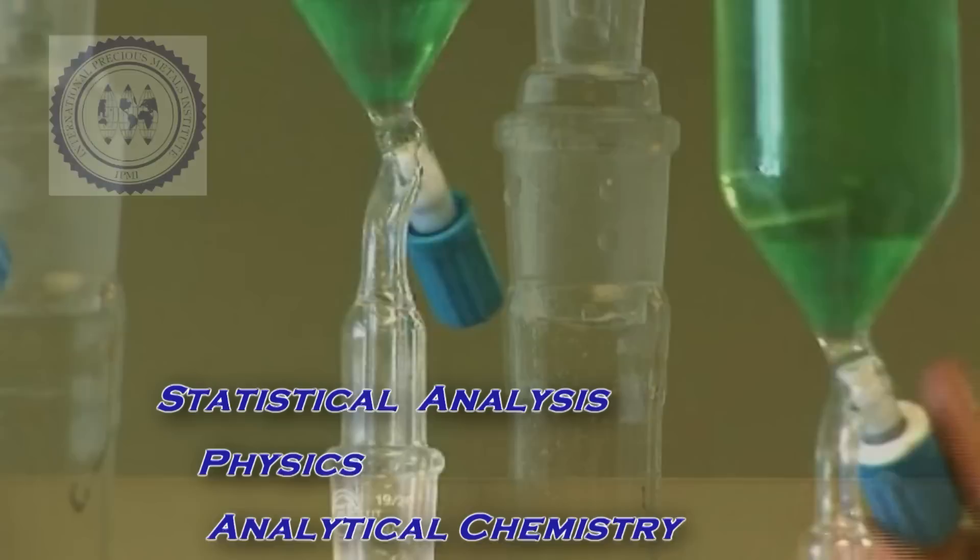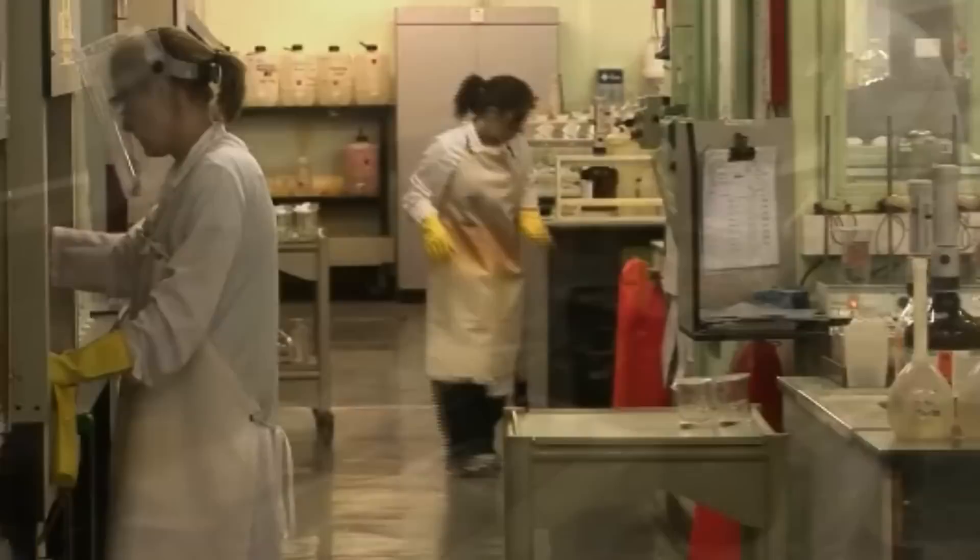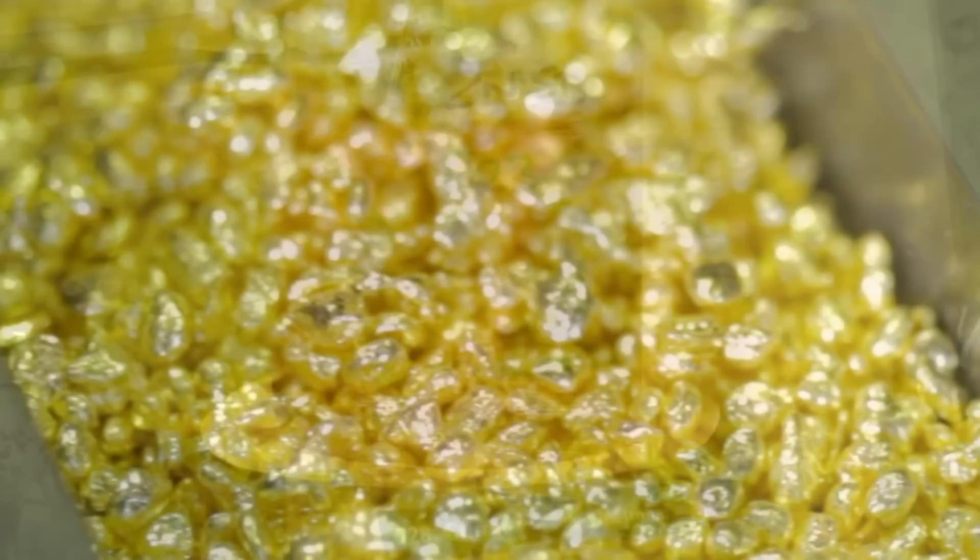There are over 200 analytical techniques used to determine precious metal concentrations in materials. Methods range from classical wet chemistry to fire assay and instrumental analysis.